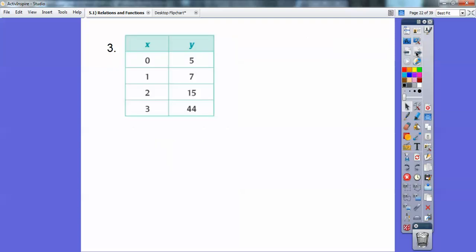Here, sometimes I'll give you a box like this. This makes it actually easier, you guys. This is the domain, 0, 1, 2, 3, and your range is 5, 7, 15, and 14. Or 44, I mean. So there you go.